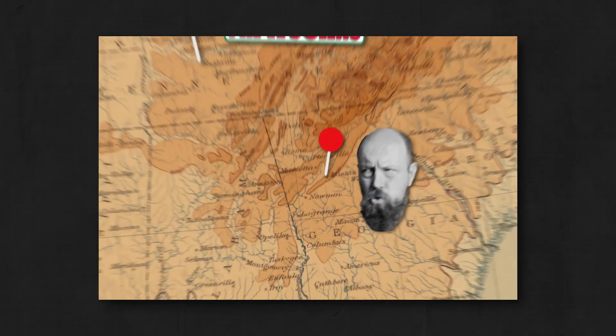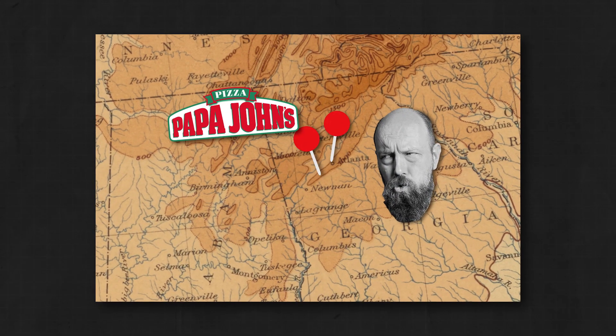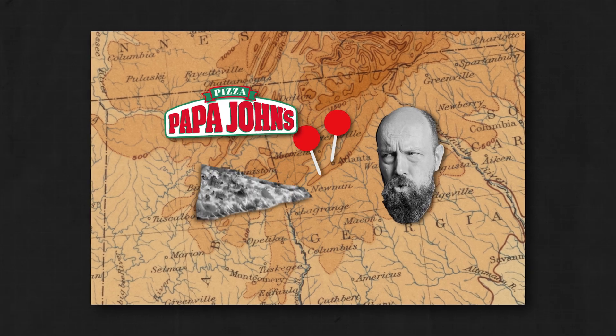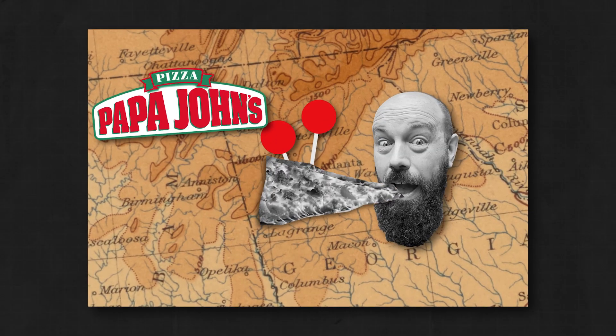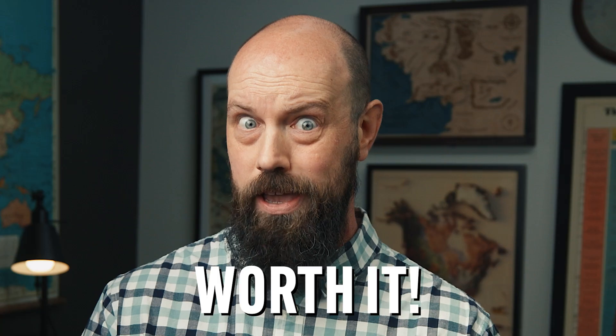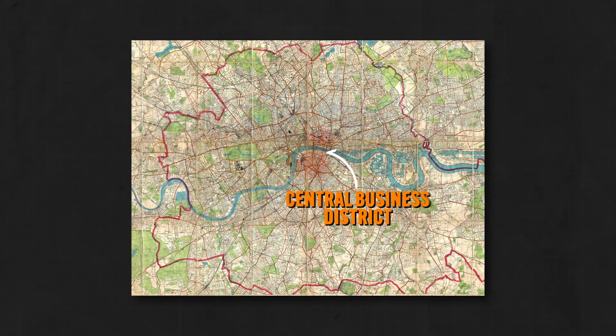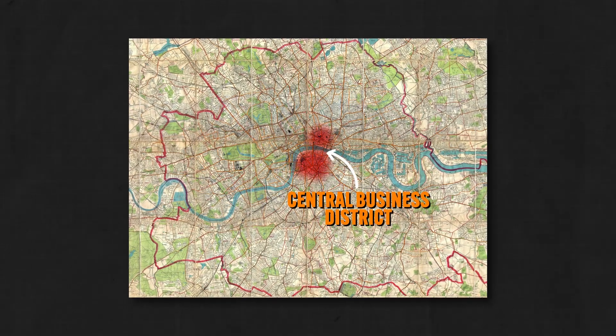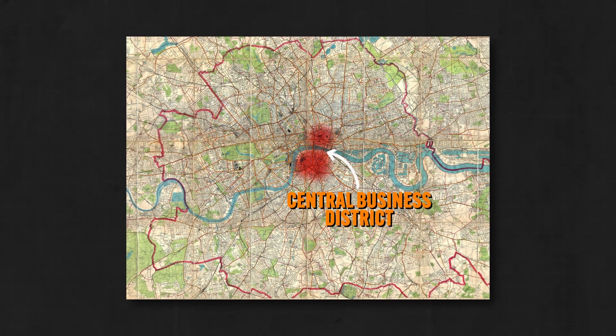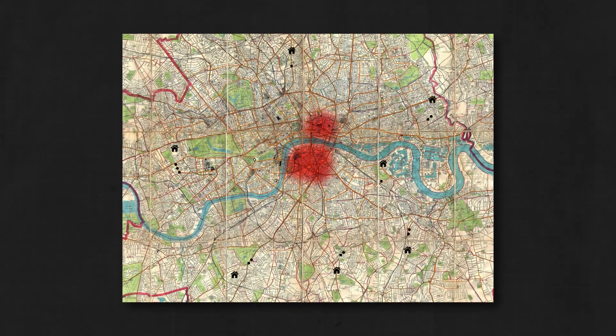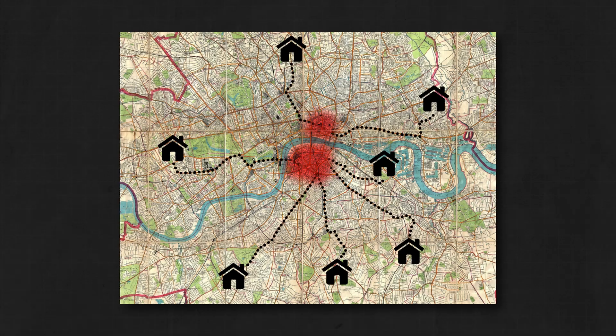A simple example of a functional region would be a pizza delivery restaurant. I'm here in Atlanta and I can't call a Papa John's in Nashville and expect them to deliver me a pizza. Why? Because I live outside of their functional region, which is defined by how far their delivery people are willing to drive. Another example of a functional region would be the central business district of a major city, which serves as the functional node for people all across the metropolitan area, with people driving in from the outskirts and suburbs to come to work.